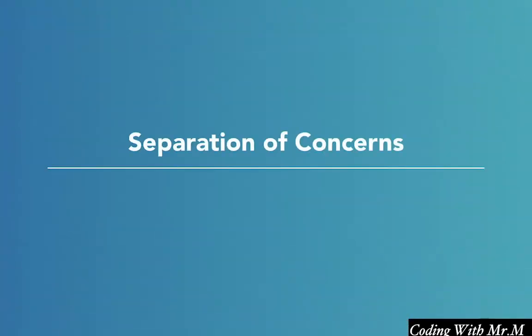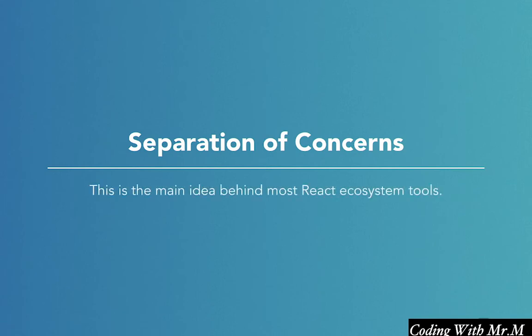So then, as you may have gathered so far, the name of the game when trying to organize a React application is separation of concerns. In other words, if we can find a way to effectively identify and organize the many different types of concerns in an application, this goes a long way toward making our codebase more maintainable. This thinking, of course, is the basis behind patterns such as MVC. And fortunately for us, a lot of thought has already been put into identifying and separating the concerns in React applications, and this has led to many of the ecosystem tools we'll be covering in this course.